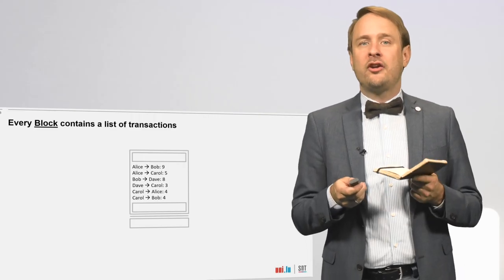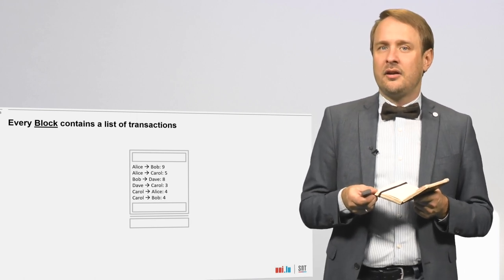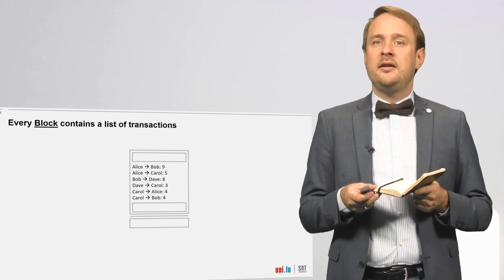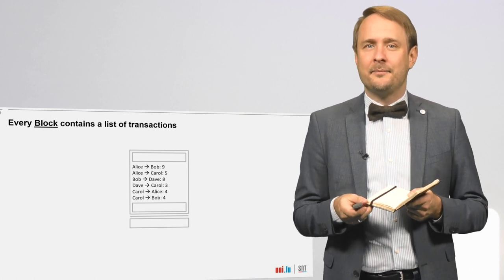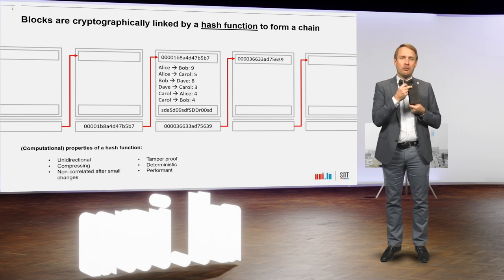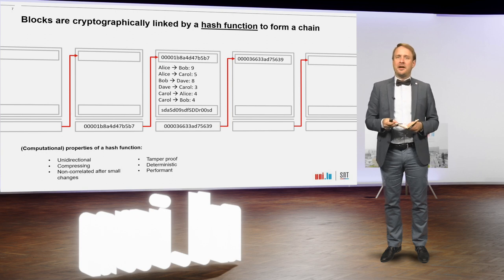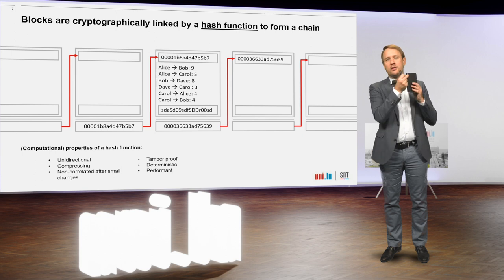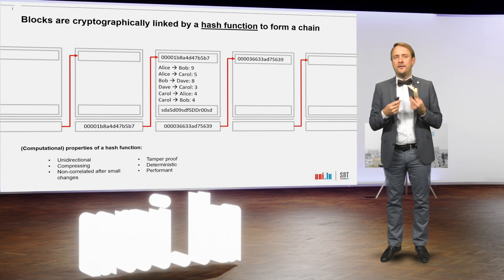How can we make sure that the information is immutable — that no one can change it? And how is the information distributed to all the other magic notebooks? Here comes the second part of blockchain: the chain. You can imagine the chain basically as the binding of the book — it holds together the individual pages so that they cannot be exchanged or altered.